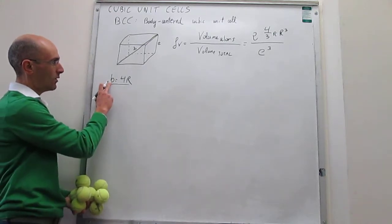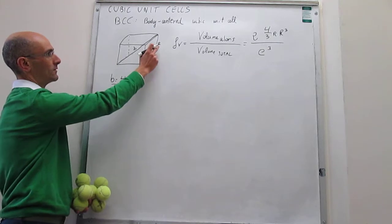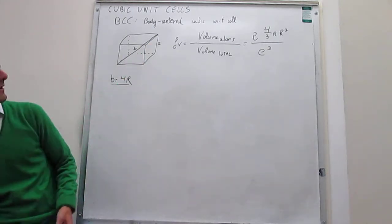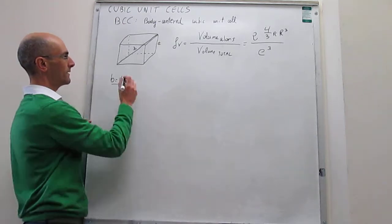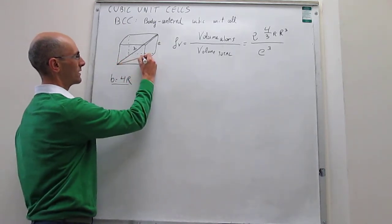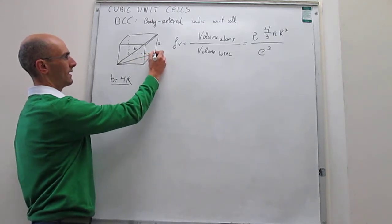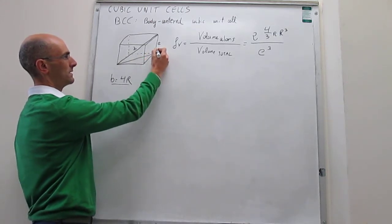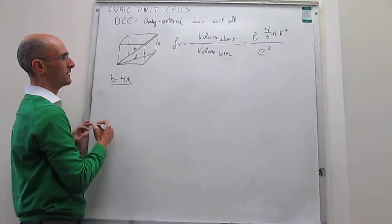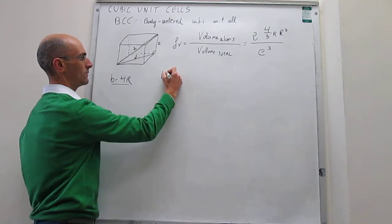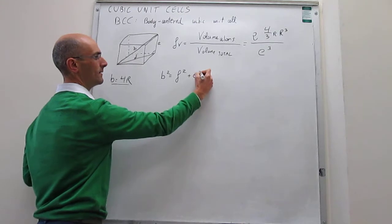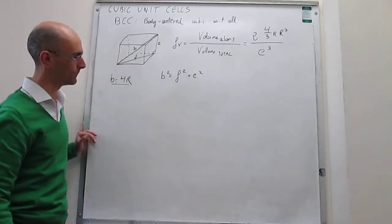We need to relate the body diagonal B to the edge E using the Pythagorean theorem. Drawing a triangle, we see that B² equals the face diagonal squared plus E squared. For one face, the face diagonal squared equals E² + E², again by the Pythagorean theorem. Substituting, B² equals E² + E² + E² = 3E².